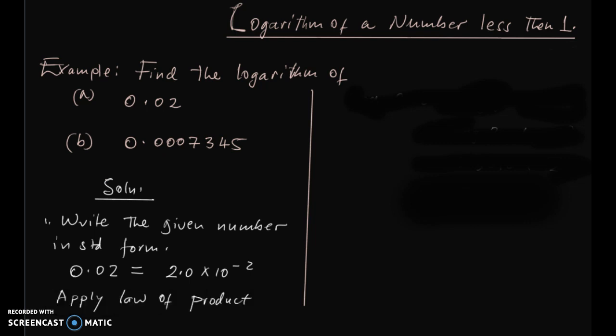Then we have to apply law of product because it is 2.0 times 10 power negative 2. This will be written as logarithm of 0.02 is the same as logarithm of bracket, 2 times 10 power negative 2. Now apply that law.